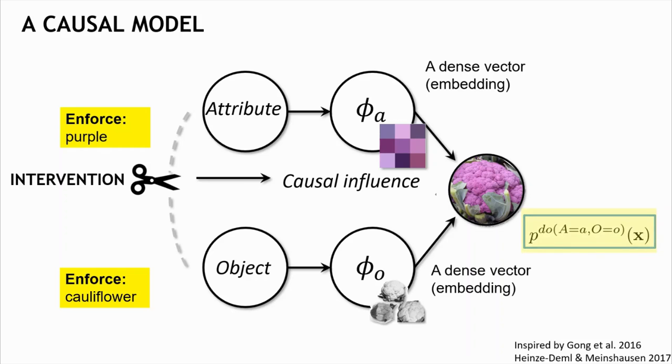In this example, the intervention enforces the attribute to be purple and the object to be cauliflower, and jointly they generate an image of a purple cauliflower. Now, because we treat images from new combinations as interventions, we postulate that the question we should ask at inference time is which intervention on attributes and objects caused the observed image.